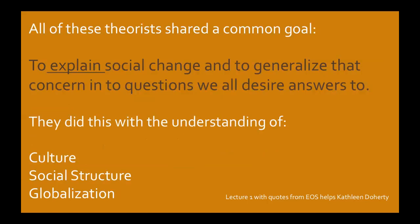All of these theories share a common goal: to explain social change and to question all the answers we have. We don't just find an end to the explanation because people change, but we can typically get a good scope of things for a while and predict where things are going. All of these thinkers did this through understanding culture, social structure, and global context. That is the end of today's presentation — please pay attention to your discussions this week, and I look forward to your posts and seeing you in the next module.